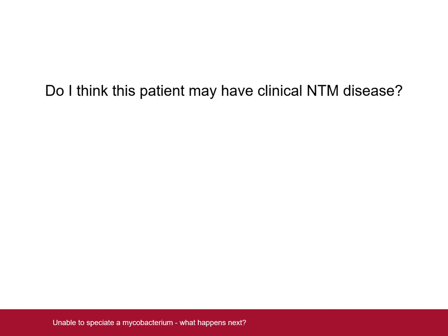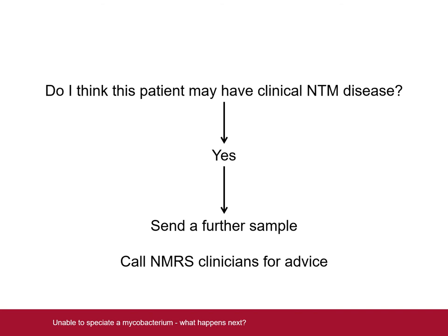If the answer is no, then no further action is needed. If the answer is yes, we recommend that further samples are taken from the patient. Even if speciation is also not possible on the second sample, having two sets of sequencing data can often allow the NTM present to be identified to at least a broad group level. NMRS clinicians are always happy to discuss such cases, as we may be able to offer more guidance in the context of more clinical information.